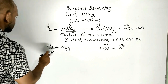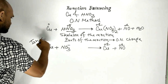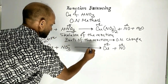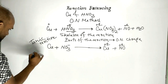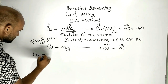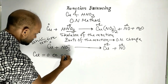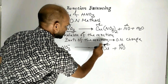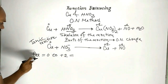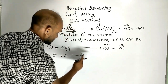This reaction — we can say — is an ionic reaction. The oxidation number of copper goes from zero to plus two, which means copper releases 2 electrons.